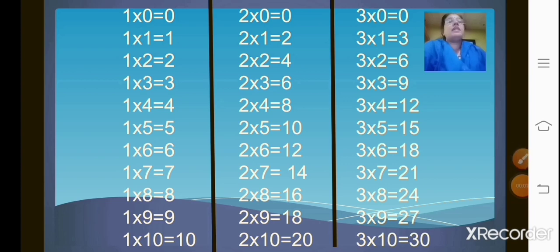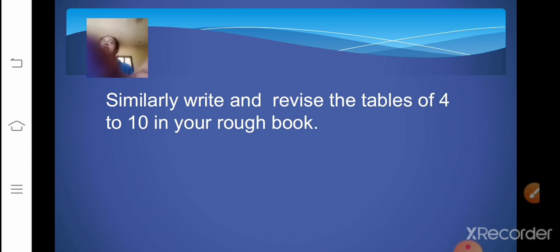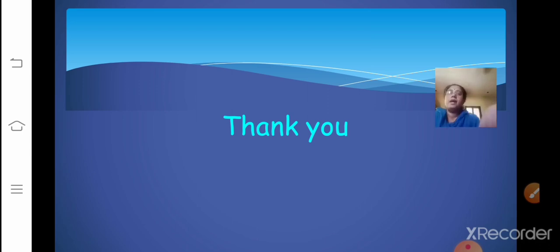Here is a slide of tables. The table of 1, 2 and 3 is given here — you have to daily revise and learn the tables by heart. Without knowing the tables it will be difficult to carry out multiplication and division sums. Similarly write and revise the tables of 4 to 10 in your rough book twice and learn them by heart. Based on the cancellation method, 3 home assignment sums are given — the first one is 2,45,160 divided by 40. Use the cancellation method and check your answer. Do the homework sums in your homework part. That's all for today — meet you again in the next class with a new topic. Bye and thank you.